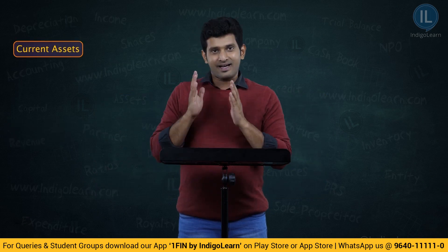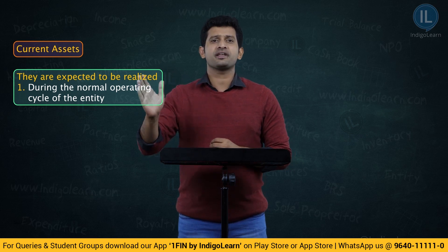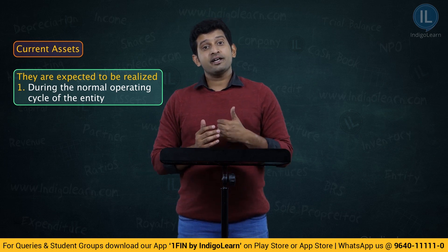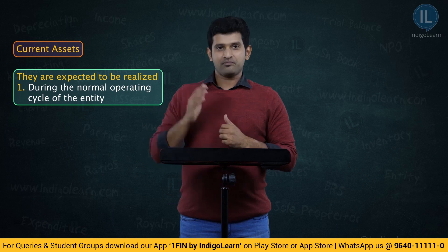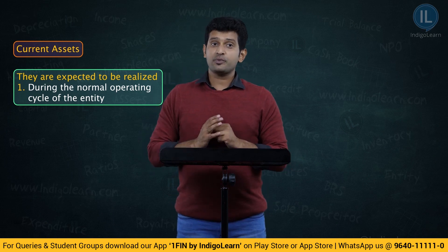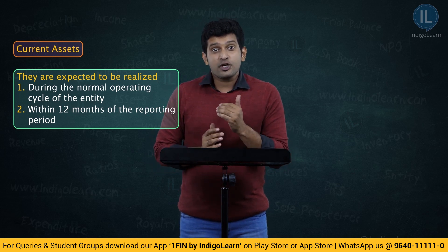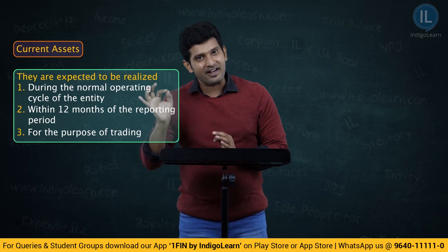According to the definition, assets will be considered as current assets only when they are realized, or intended to be sold or consumed during the normal operating cycle of the entity. First, they are expected to be realized or consumed during the normal operating cycle. Second, they are expected to be realized within 12 months from the reporting period. Third, they are expected to be utilized for the purpose of trading — for trading only.